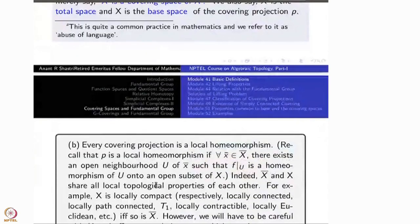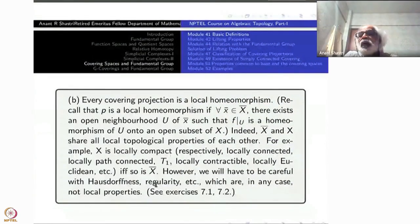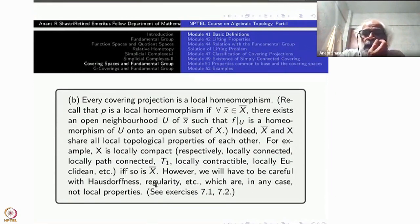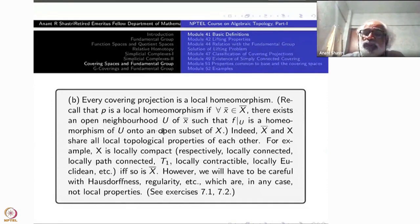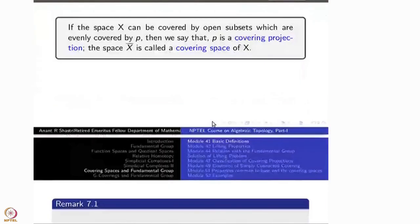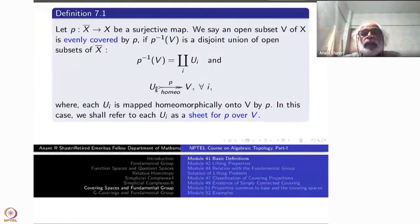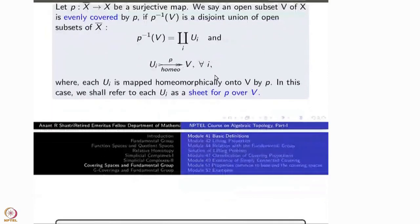Every covering projection turns out to be a local homeomorphism. Recall: for every x in the domain X-bar you must have a neighborhood U of x such that f restricted to U is a homeomorphism onto f(U), which is an open subset of X. If this happens for every x, then f is a local homeomorphism — and that is precisely what happens here. Therefore every covering projection is a local homeomorphism.